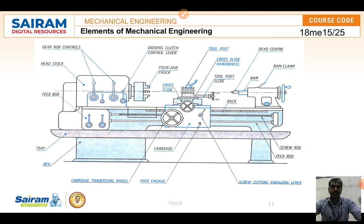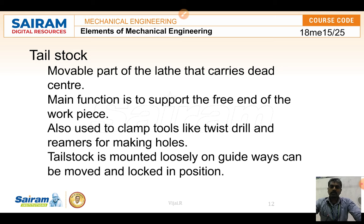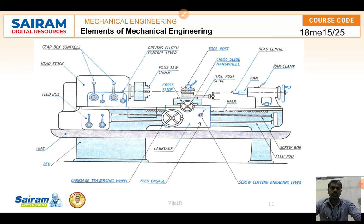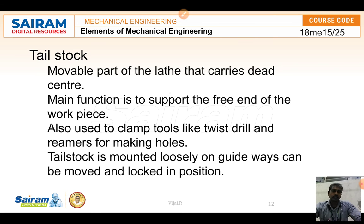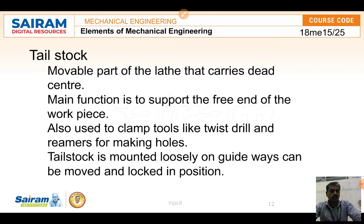The tailstock is the movable part located at the right end of the lathe. It consists of a ram, clamp, and dead center. The tailstock can be moved by loosening the locking nut and adjusted along the guideways. It is used for supporting long workpieces at the free end, and can also be used for clamping drill tools or reamers for making holes on the face of workpieces.